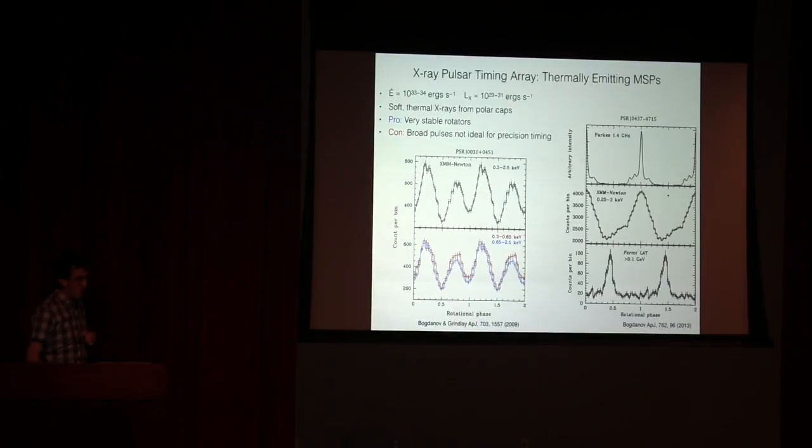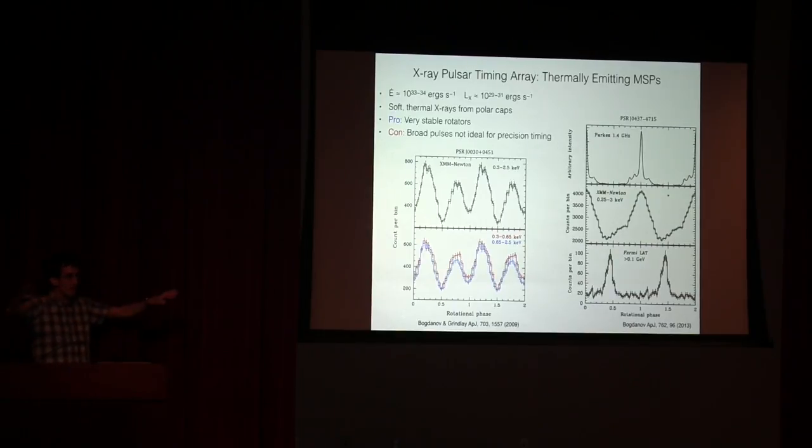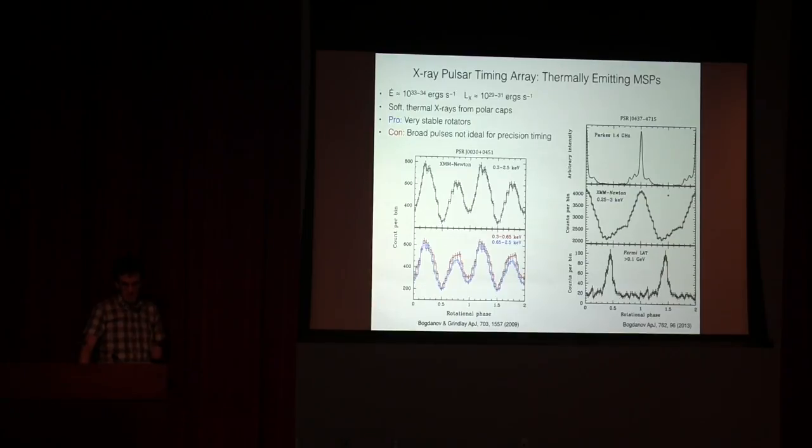There are a number more of these objects that have these smooth gentle pulsations, and they're very stable rotators. But the fact that their pulsations are relatively broad means that we don't get very good intrinsic precision when we measure them. So then the question is, okay,